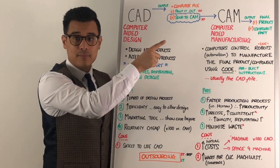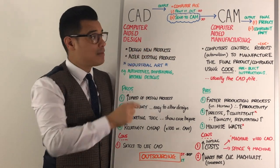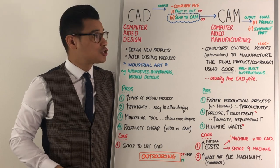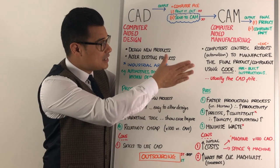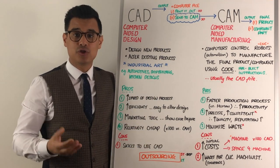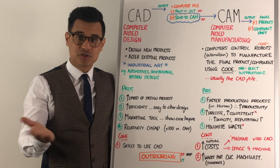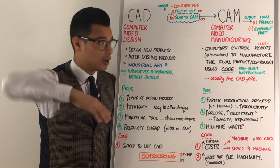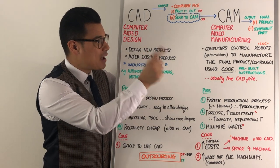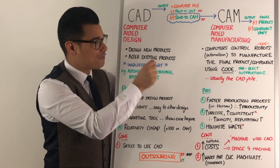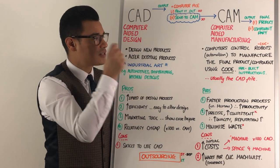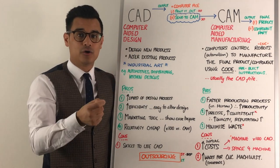Or you could send this computer file to CAM — computer-aided manufacturing — which essentially means you have computers that control robots, like a robot arm. That's effectively referred to as automation, to manufacture the final product or component using some form of code.